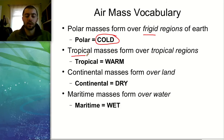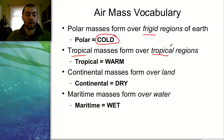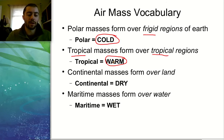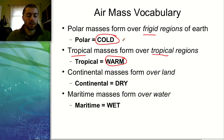Tropical air masses, on the other hand, form over tropical regions — maybe the Caribbean, certain areas of South America. Tropical air masses are going to be warm. If you go to a tropical island, that's warm and people vacation there for a reason, whereas a cold polar area wouldn't be as pleasant. So polar equals cold and tropical equals warm — you need to associate those two terms with their respective descriptions.